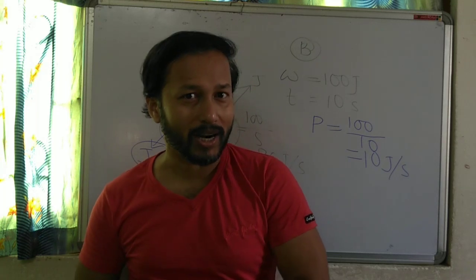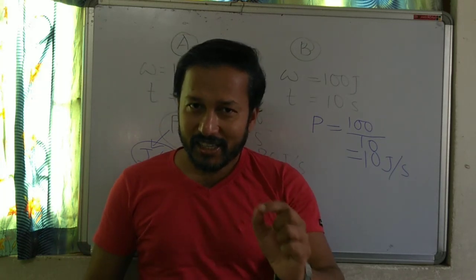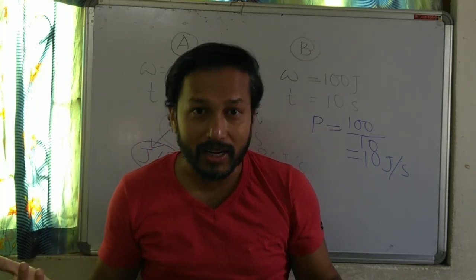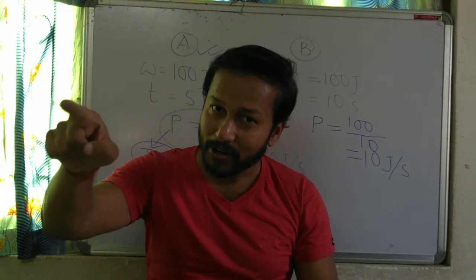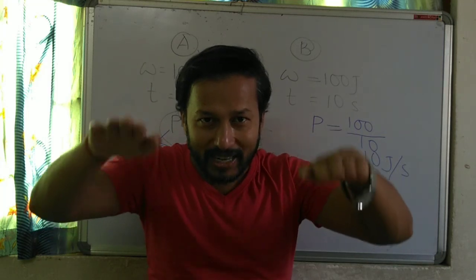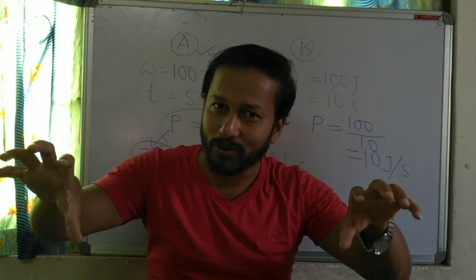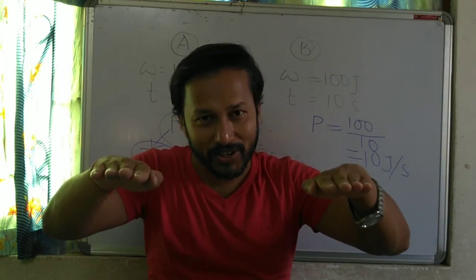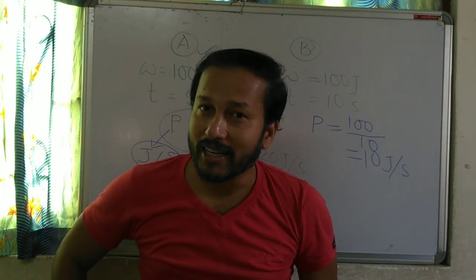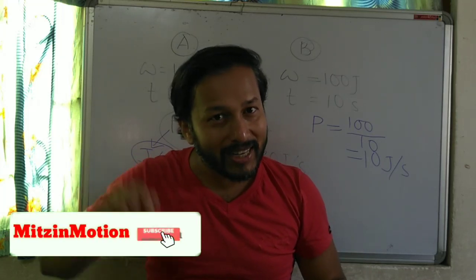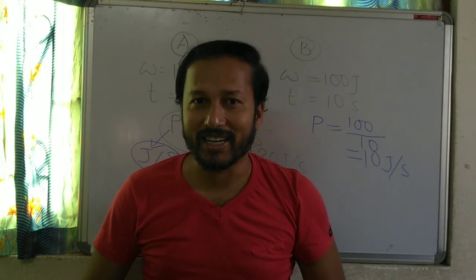Now we shall discuss about energy. Energy is the ability of doing work. If you have some energy, then only you will be able to do some work. To do some work, you require some energy. So energy and work are equivalent — how much energy you have, that much work you can do. Therefore, the unit of energy is also Joule in SI, and erg in CGS, same as work.